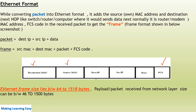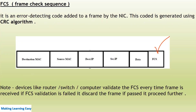One important point: Ethernet frame size lies between 64 to 1518 bytes. The payload or packet received from the Network Layer can be between 46 to 1500 bytes. FCS stands for Frame Check Sequence — it is an error-detecting code added to a frame by the NIC card, generated using the CRC algorithm. You can see the FCS at the end of the frame in the screenshot. Devices like routers, switches, and computers always validate the FCS every time a frame is received. If FCS validation fails, it discards the frame; if it passes, it proceeds further.